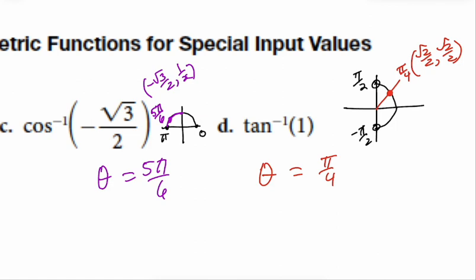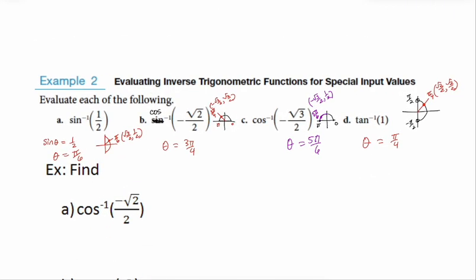I will always tell you where to look. For sine, tangent, and cosecant, we're always looking in the first and fourth quadrants. For cosine, secant, and cotangent, we're always looking from 0 to π.